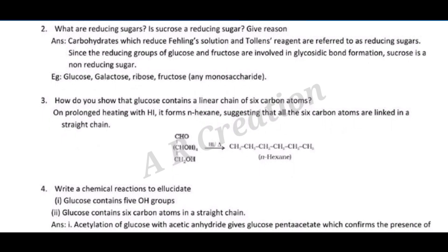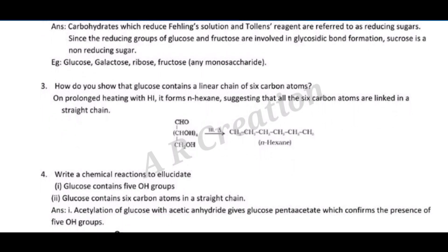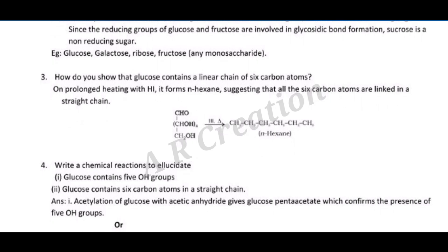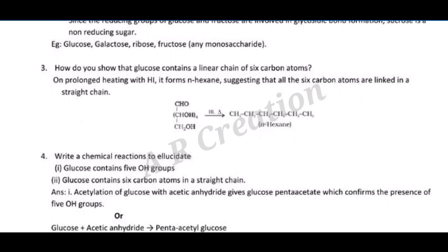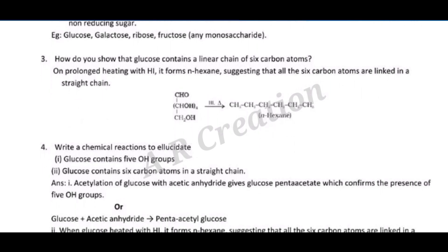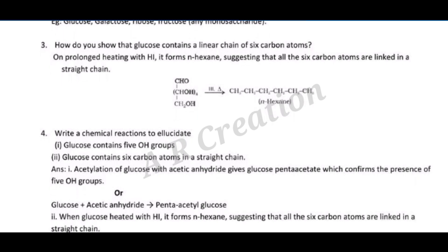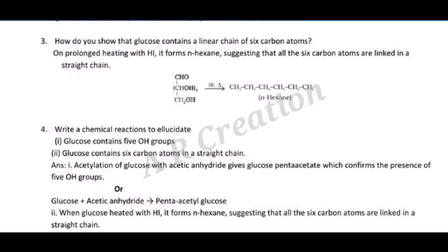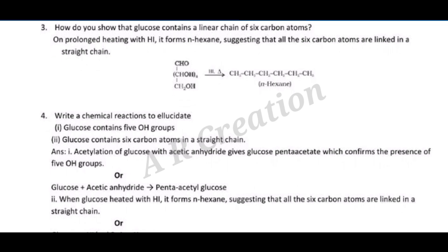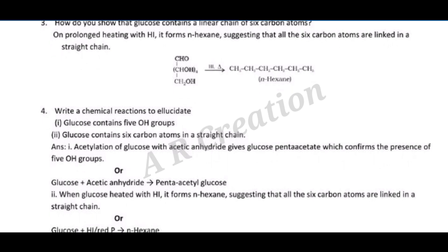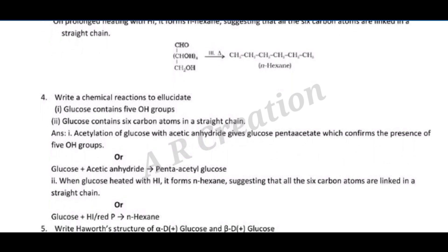Question three: how do you show that glucose contains a linear chain of six carbon atoms? Answer: on prolonged heating with HI, glucose forms n-hexane, suggesting that all six carbon atoms are linked in a straight chain: CH3–CH2–CH2–CH2–CH2–CH3 (n-hexane).